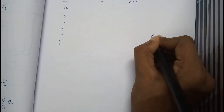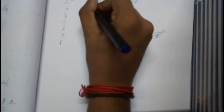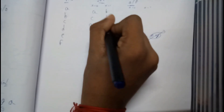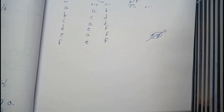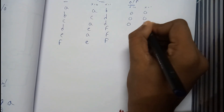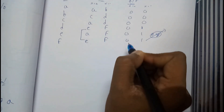Let me rewrite the table with G removed and replaced by E everywhere. States are now A, B, C, D, E, F. Next states: A→A, A→B; B→C, B→D; C→A, C→D; D→E, D→F; E→A, E→F; F→E, F→F. Outputs: zero, zero, zero, zero, zero, one, zero, one, zero, one, zero, one.